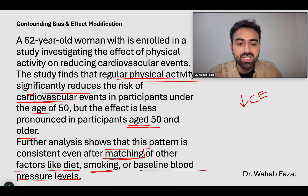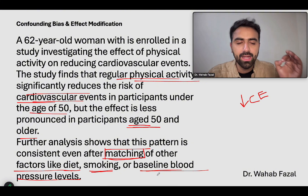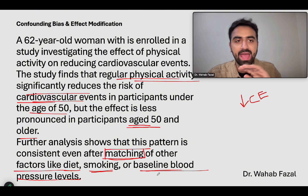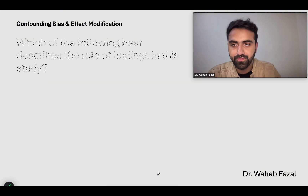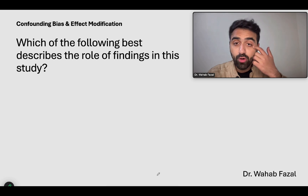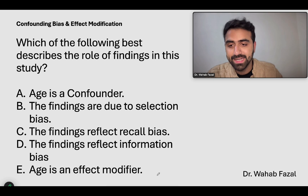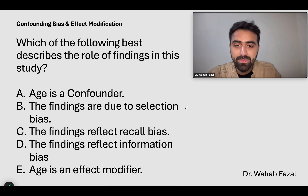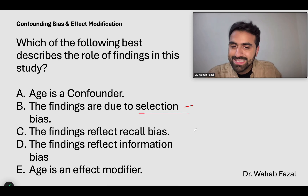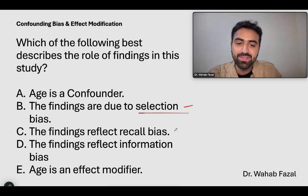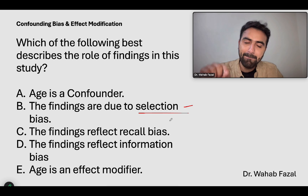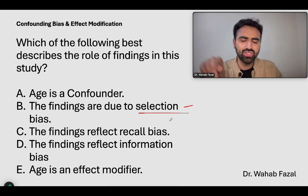What they have told us is that there is no other confounder — we have matched the two groups for every other factor: diet, smoking, and baseline blood pressure. So basically, their study is great; they have matched the two groups for any confounding and there is no confounding. Which of the following best describes the finding? Is it selection bias? No — selection bias means your sample is not representative of the population, which is not the case here. Is it recall bias? If it's not information bias, it can't be recall bias.